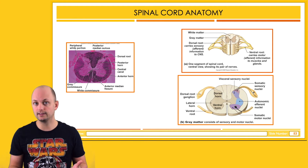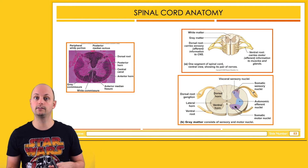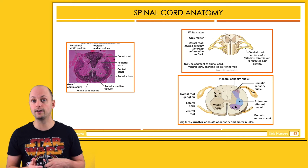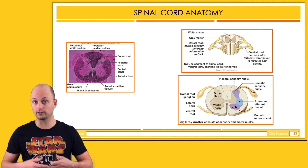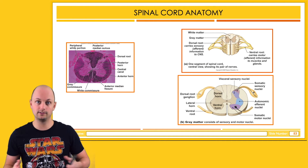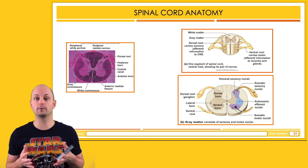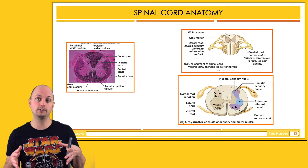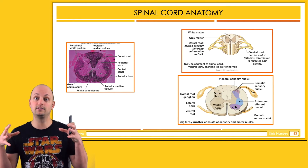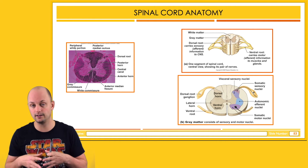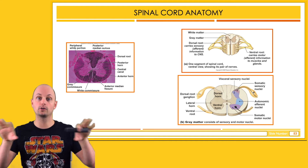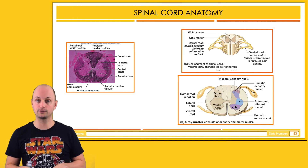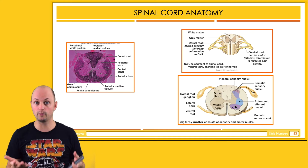One of the interesting things is that the gray matter and the white matter in the spinal cord is reversed. In the spinal cord, we typically see that the gray matter is deeper inside and the white matter is located more towards the periphery. You can see this really well when we look at it in cross-section.